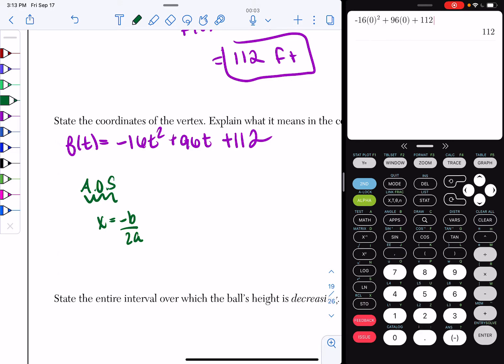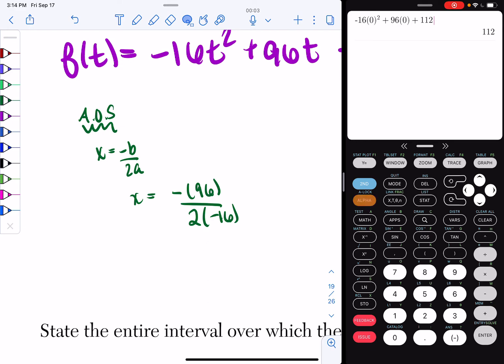So, if you look, I need to be able to identify my a value and my b value. My b value for this example is 96. So, I have x = -(96) all over 2. And in this case, my a value is -16. So, let me make this smaller. That's the perk of using an iPad. So, now I have this. I do alpha y equal enter. Second M7, 1, 1, 2, alpha y equal enter. And I do -(96) all over 2 times -16. And that gives me a 3. So, I know my x value is 3. So, I can say x = 3.